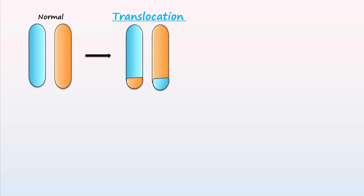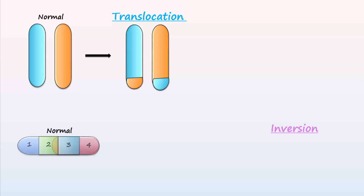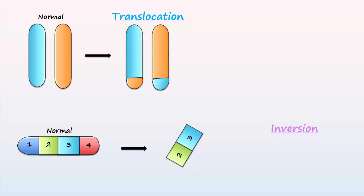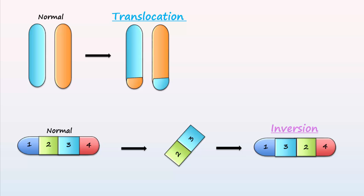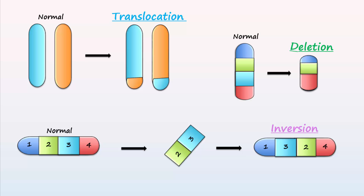Translocations occur when a portion of one chromosome is transferred to another chromosome and vice versa. An inversion occurs when part of a chromosome is turned upside down and a portion becomes reversed in order. A deletion occurs when part of a chromosome is lost.